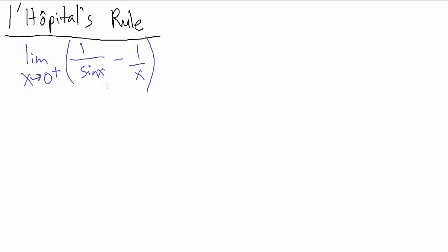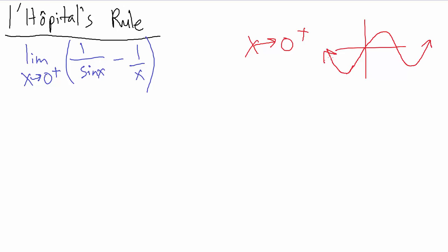When we do limits algebraically, we always want to try direct substitution first. So as x goes to zero, what's happening with one over sine of x? As x goes to zero from the positive side, sine of x is also going to zero and it's coming in from the positive side. So following this along from the right side, we see that we are approaching zero — y approaches zero. So as x approaches zero from the positive side, sine of x also approaches zero from the positive side.